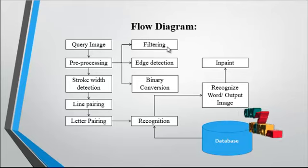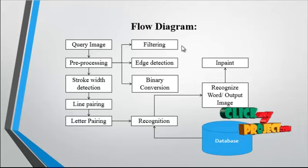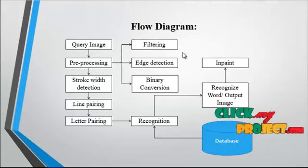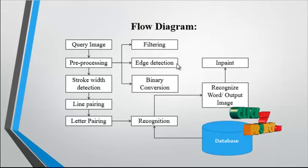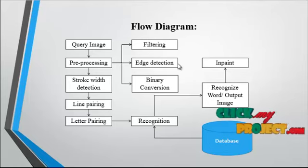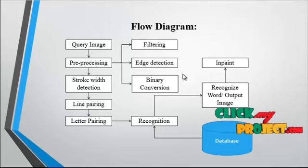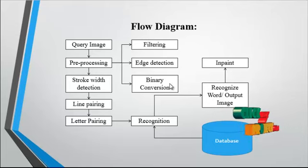In filtering, we apply the Gaussian filter to remove the noise from the query image. After removing the noise, edge detection is carried out using the Canny edge detection method. After edge detection, the image is converted into a binary image, so the binary conversion is undertaken.